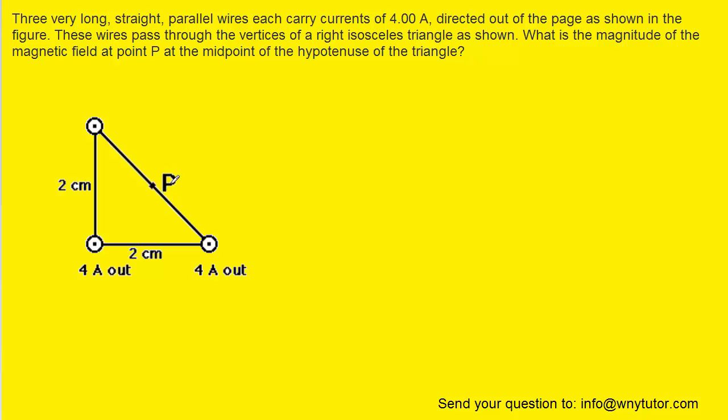What we want to do first is actually note that the magnetic field produced by this wire here, as well as the magnetic field produced by this wire, will actually cancel each other out. In order to see that, we have to understand how to predict the direction of the magnetic field that a current carrying wire produces.